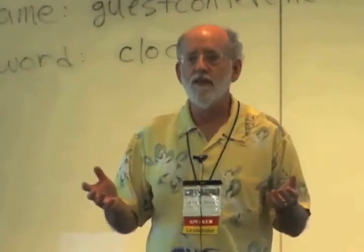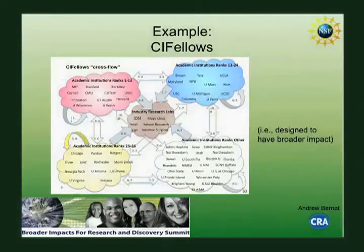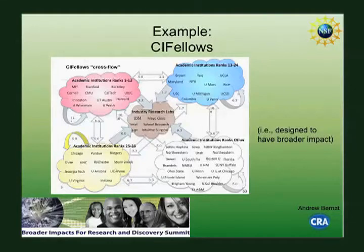The broader impact I want to highlight is a decision we made in the review process called MAX 2. We had a bunch of criteria — their track record had to be unbelievably good. But secondly, we decided we wanted to broaden who got involved, so we instituted a MAX 2 rule: no more than two fellows could come from an institution, and no more than two fellows could go to an institution as a home. This immediately spread out the kinds of institutions students came from and where they went — a way to broaden the impact of a program.